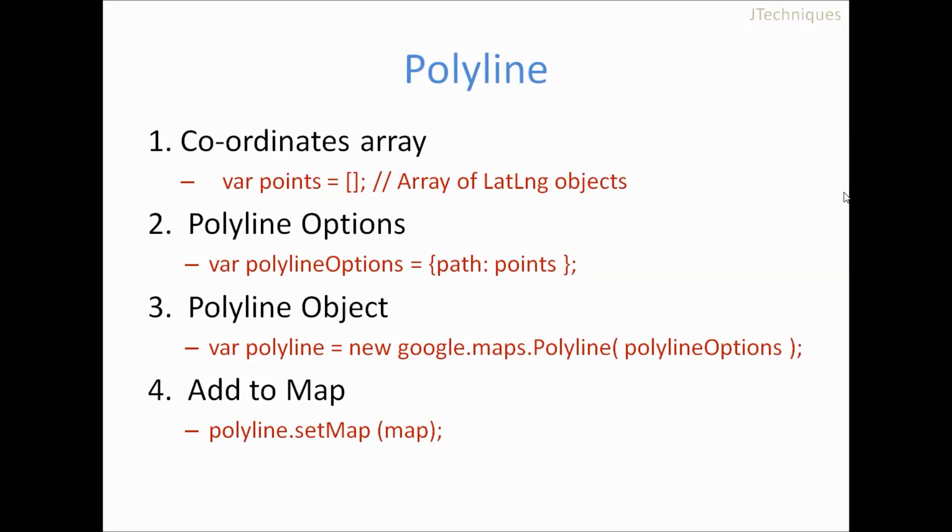To create a polyline, there are four steps. First is we need to declare array of coordinates, that is array of lat long objects. Then we need to create options for the polyline. In this option, you can provide the color of the line, the weight of the line, that is how big or thin you want the line to be.